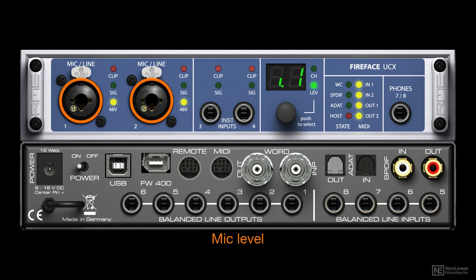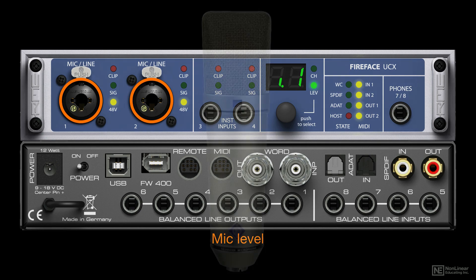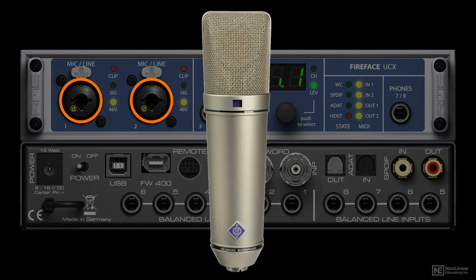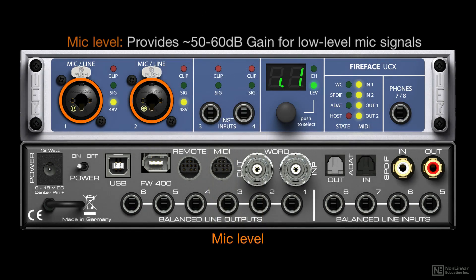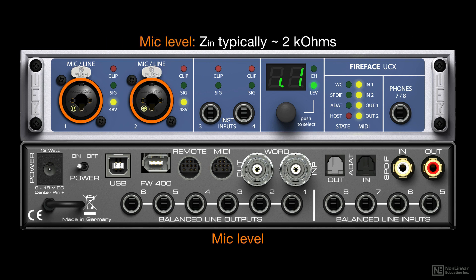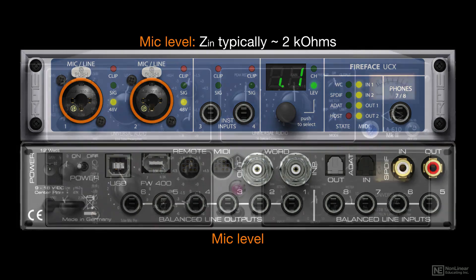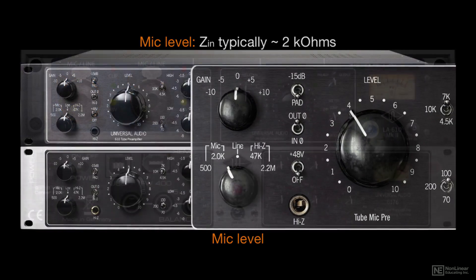A mic level input, as in a mic pre, is optimized to handle the lower-level output from a microphone, and typically provides 50 to 60 dB of gain or so to bring those signals up to line level. Since most mics have output impedance in the 200-ohm range, more or less, a mic input should have a lower input impedance — around 2 kilo-ohms or so.